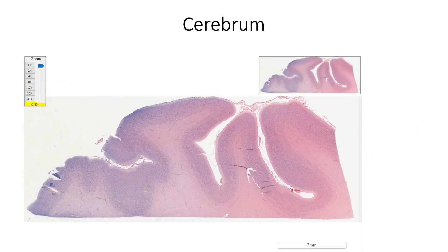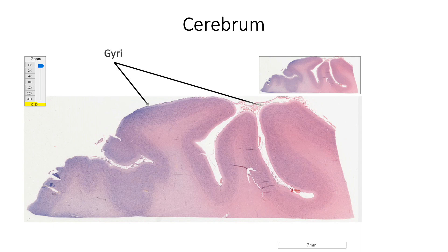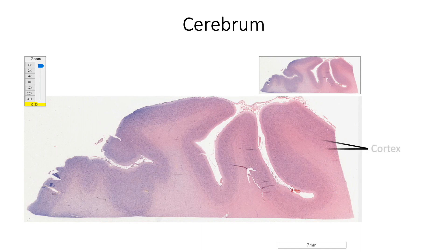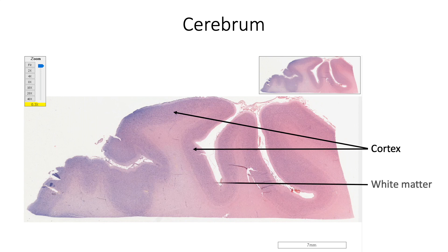Cerebral hemispheres are located in the supratentorial compartment of the cranial cavity. They are covered by three layers of meninges. Their surfaces show folding, with elevations known as gyri, separated by depressions known as sulci. The cerebral hemisphere has an outer cortex and an inner white matter containing basal nuclei at its depth.